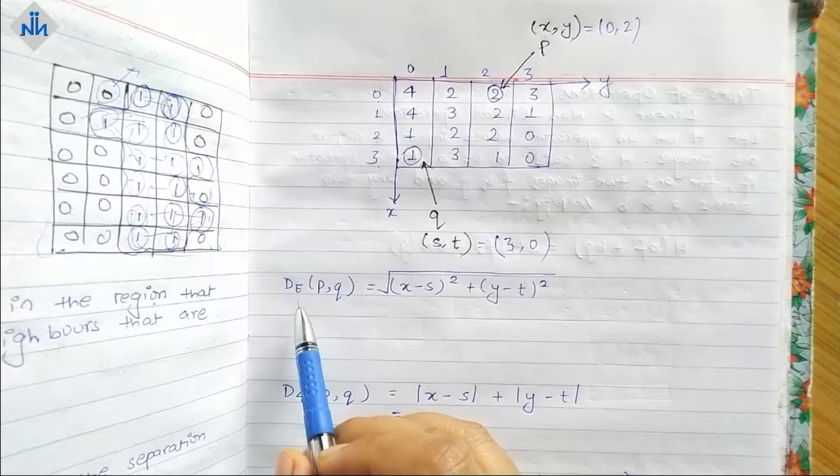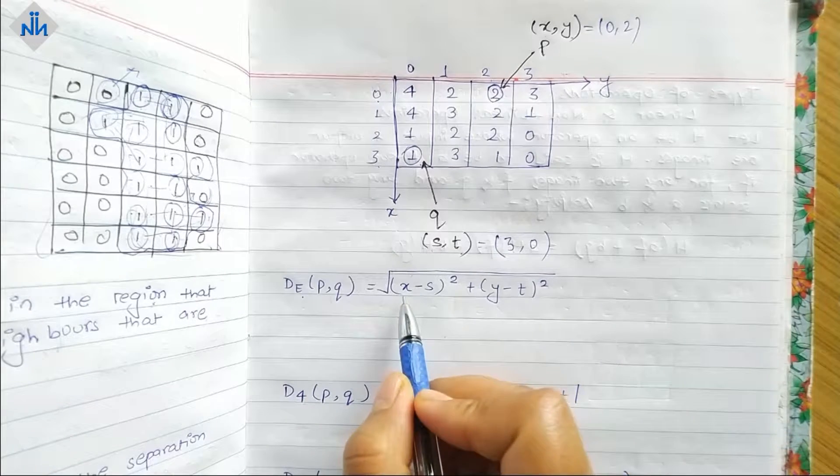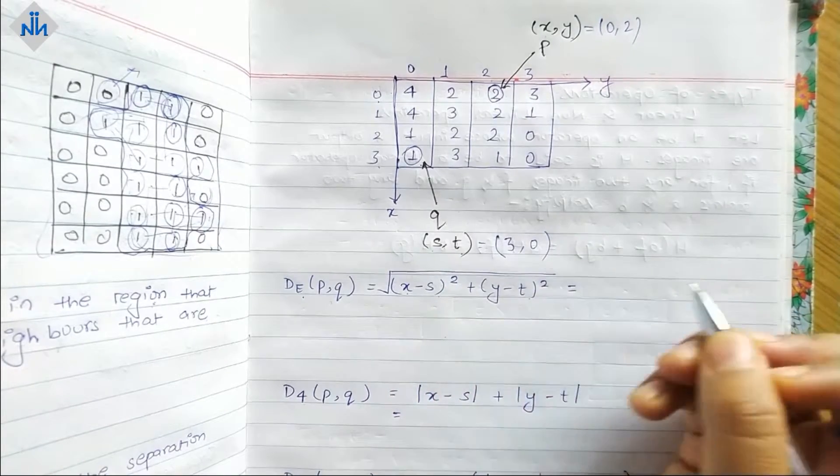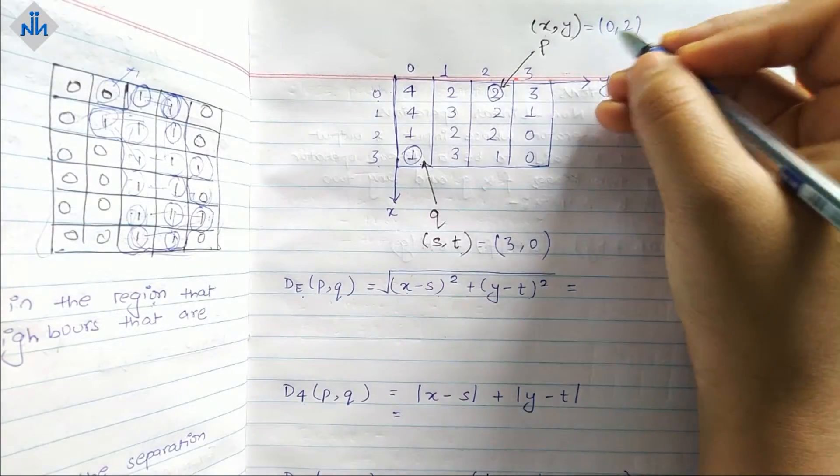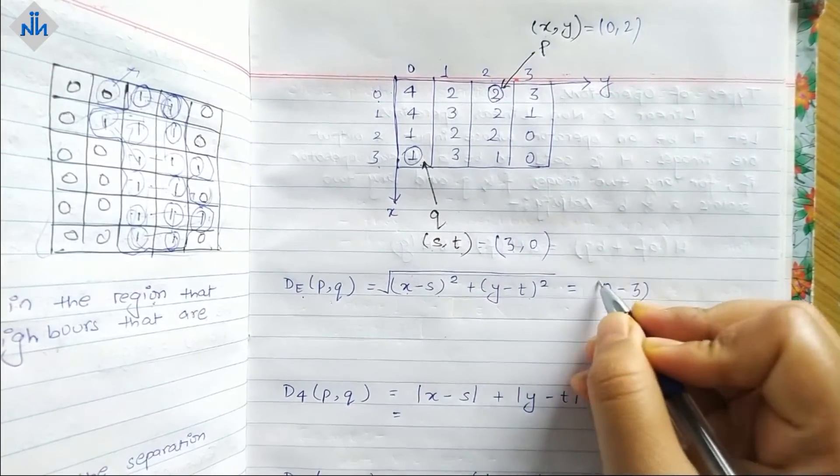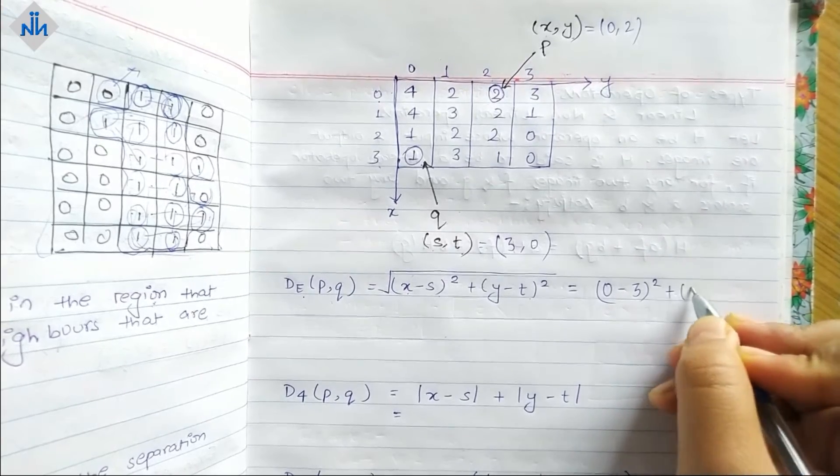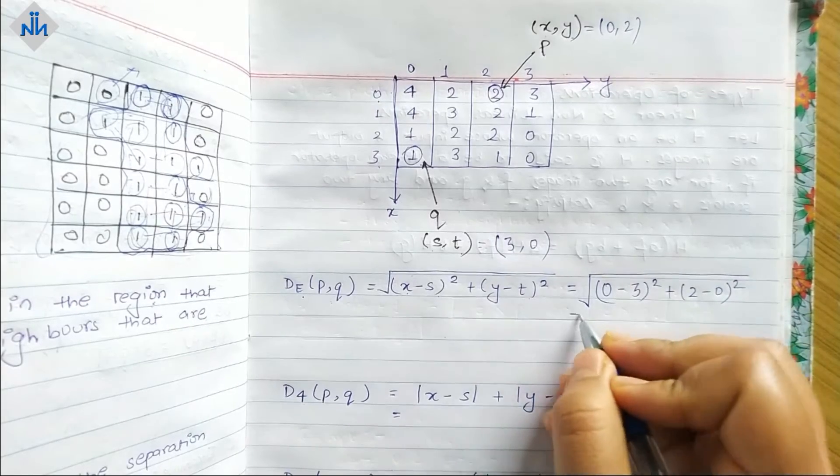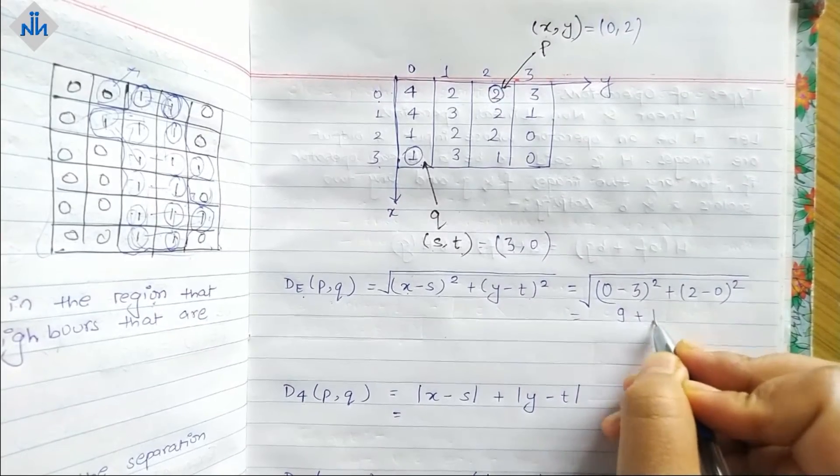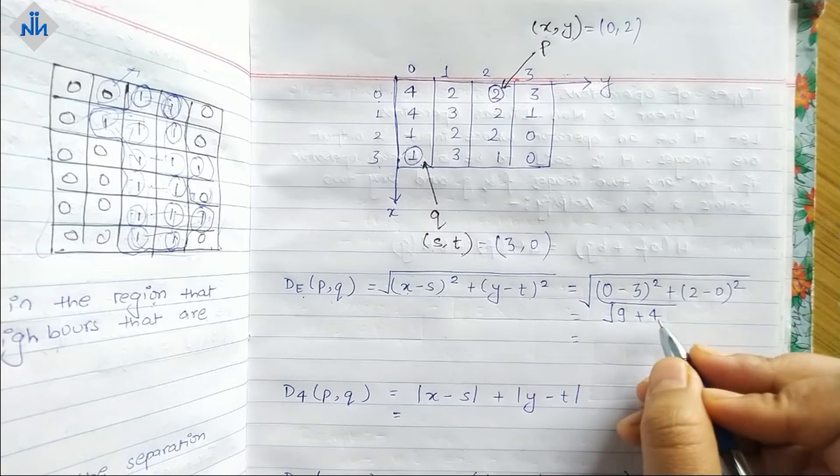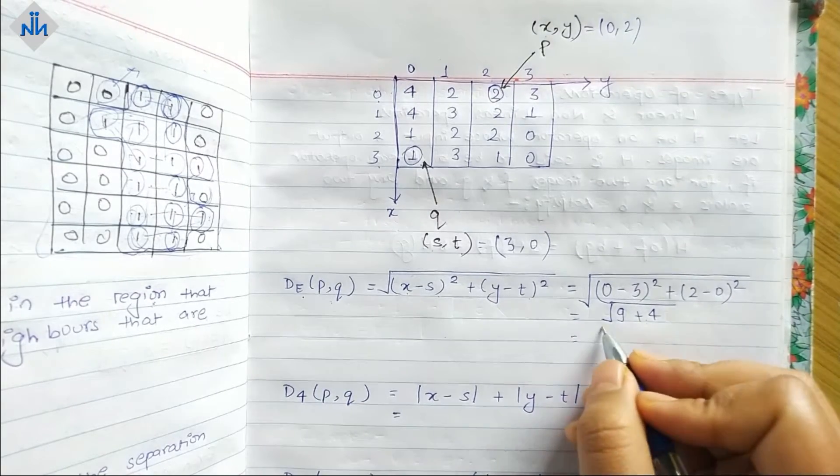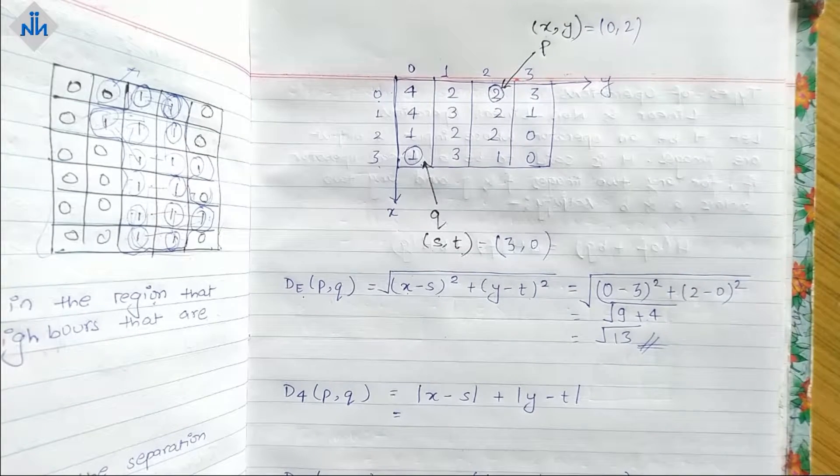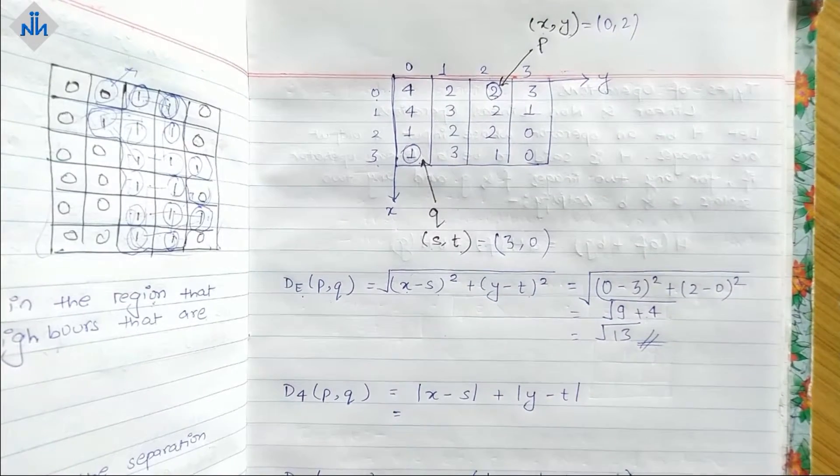First, we will find out the Euclidean distance. The formula is square root of (x minus s) whole square plus (y minus t) whole square. So we will have (0 minus 3) whole square plus (2 minus 0) whole square, which gives us 9 plus 4. So we will have root 13 as our answer. This is the Euclidean distance between P and Q.